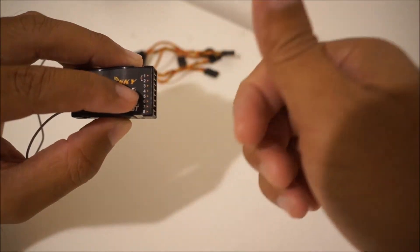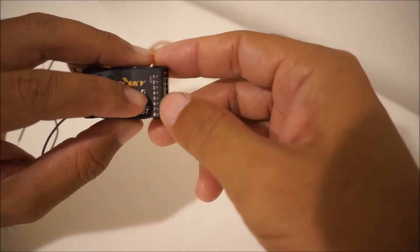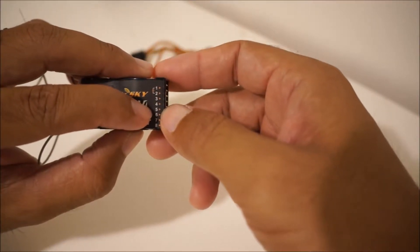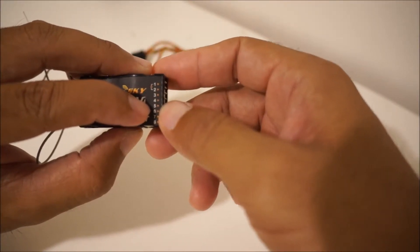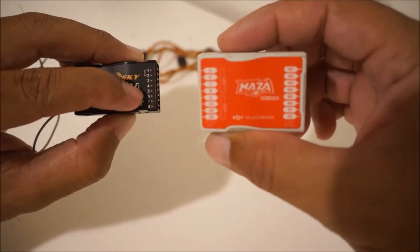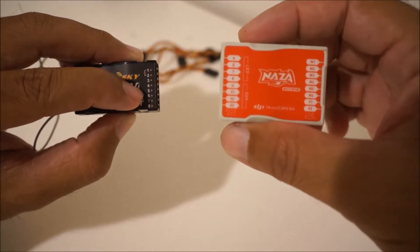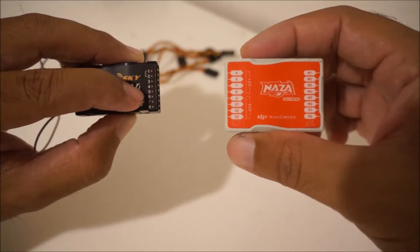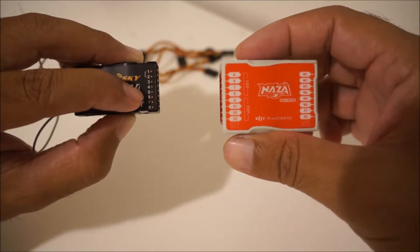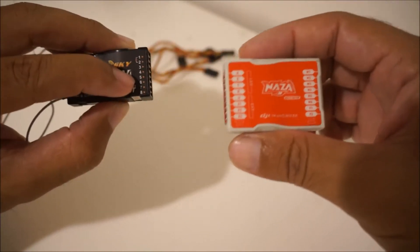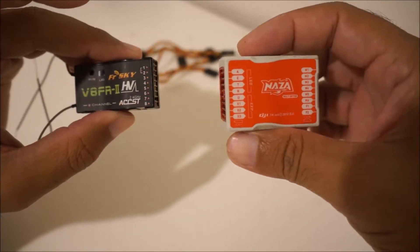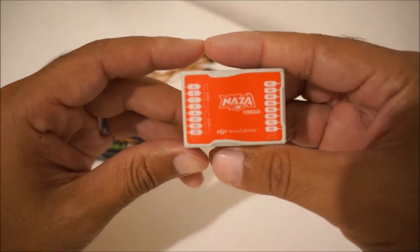And the fifth channel would be the flight mode control, so that way you could control your flight controller on what flight mode it's going to be on, whether it be acro mode, GPS mode, or other modes it has.